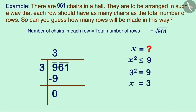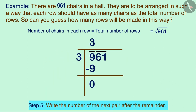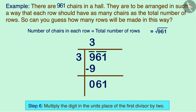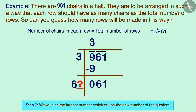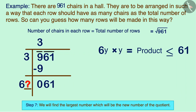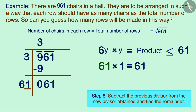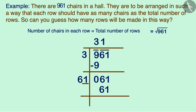Here we are getting 0. We will write the number below the next bar next to the received remainder. Now leave a blank space for the units place of the new divisor and multiply the digit in the units place of the first divisor by 2. Write the resulting product beside the blank. To fill this blank, we find the largest digit that will be the new digit of the quotient and multiply the new divisor by it. The digit 1 will be put in the blank because 61 times 1 equals 61, which equals the new factor, so the remainder will be 0.